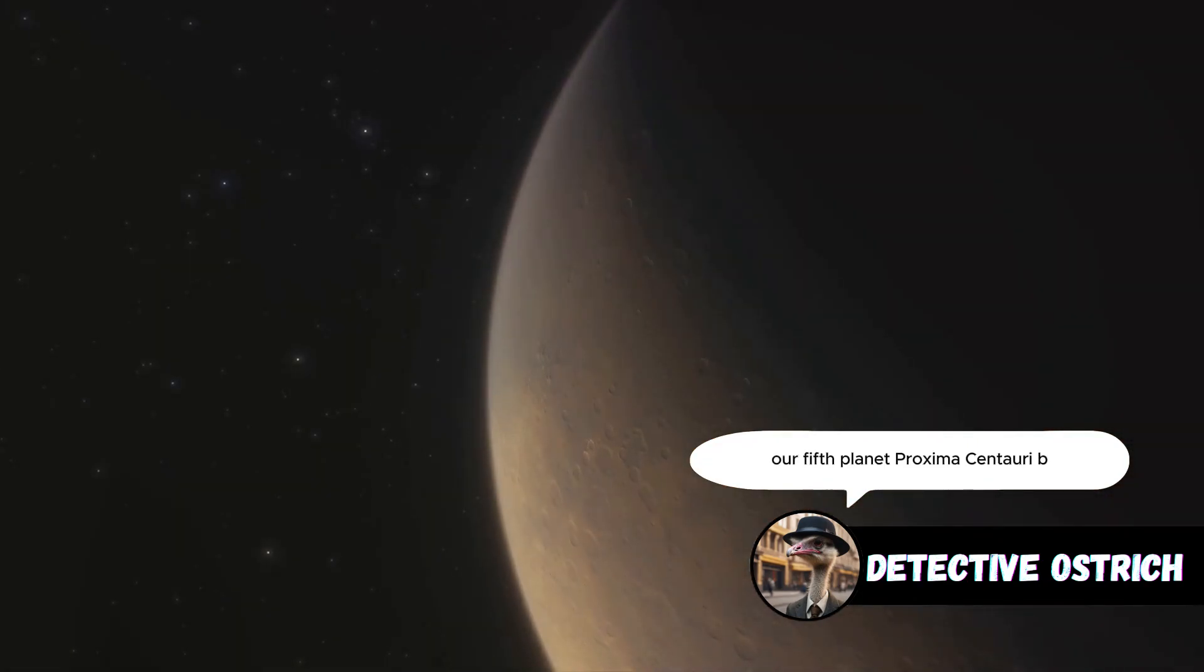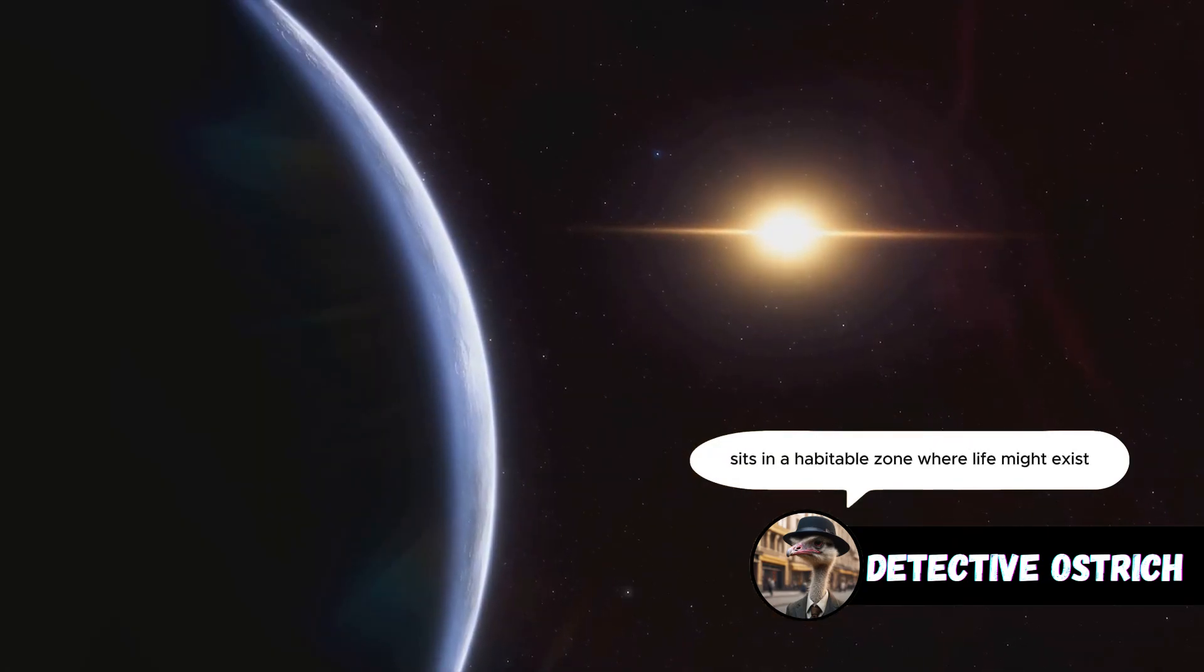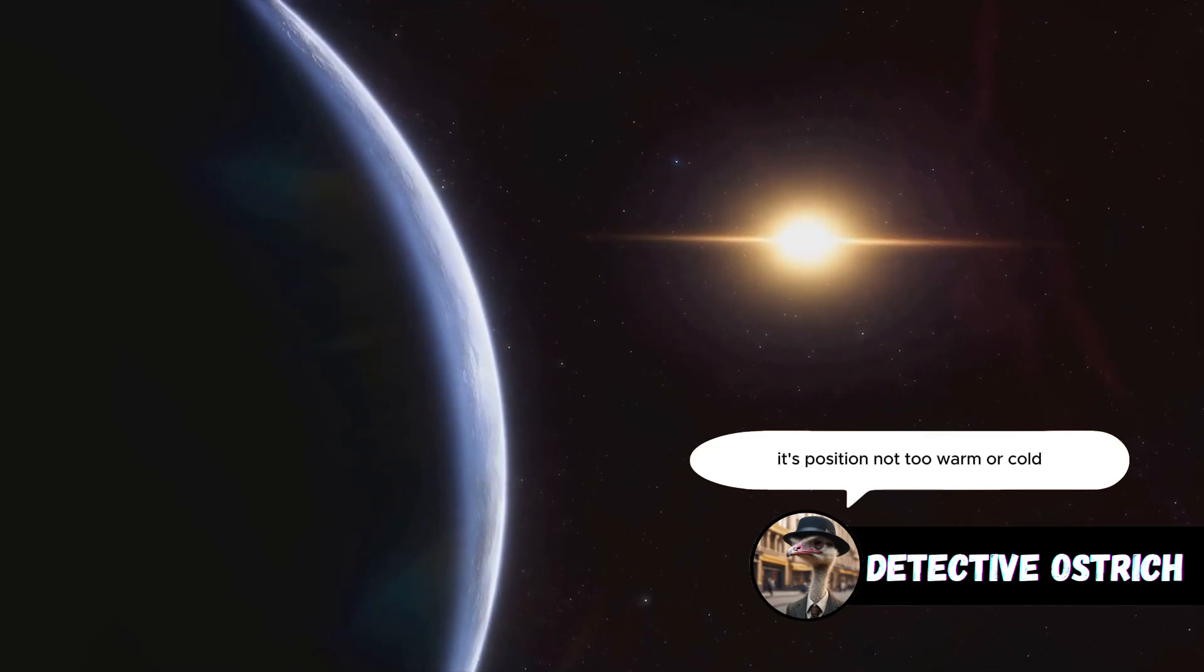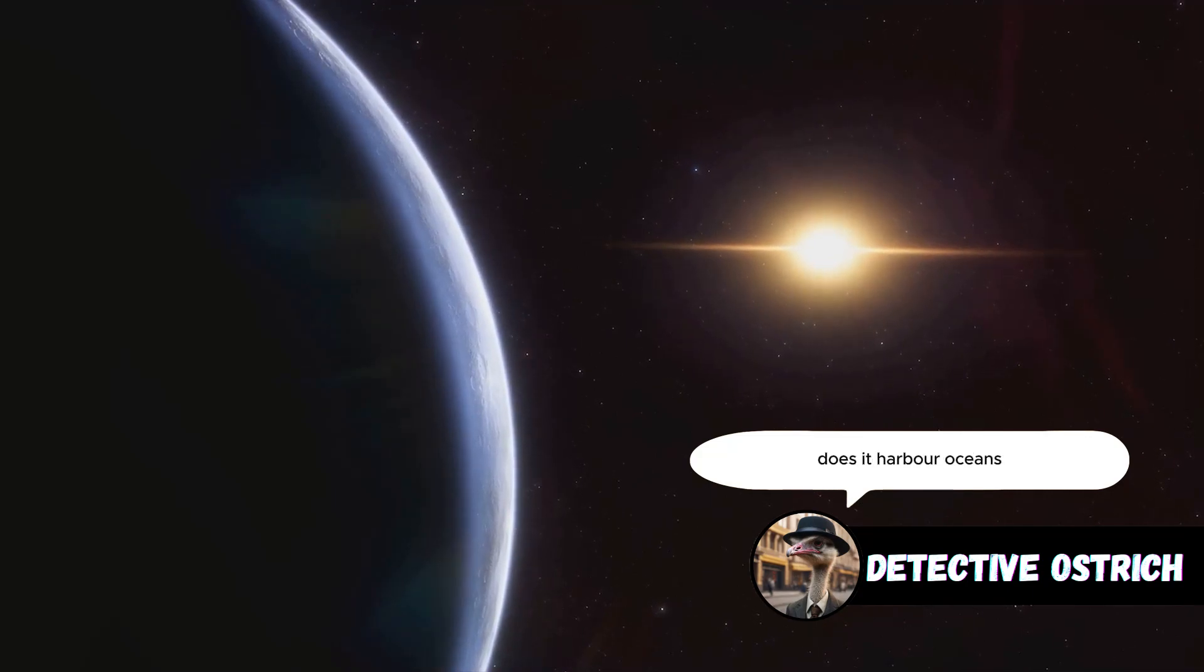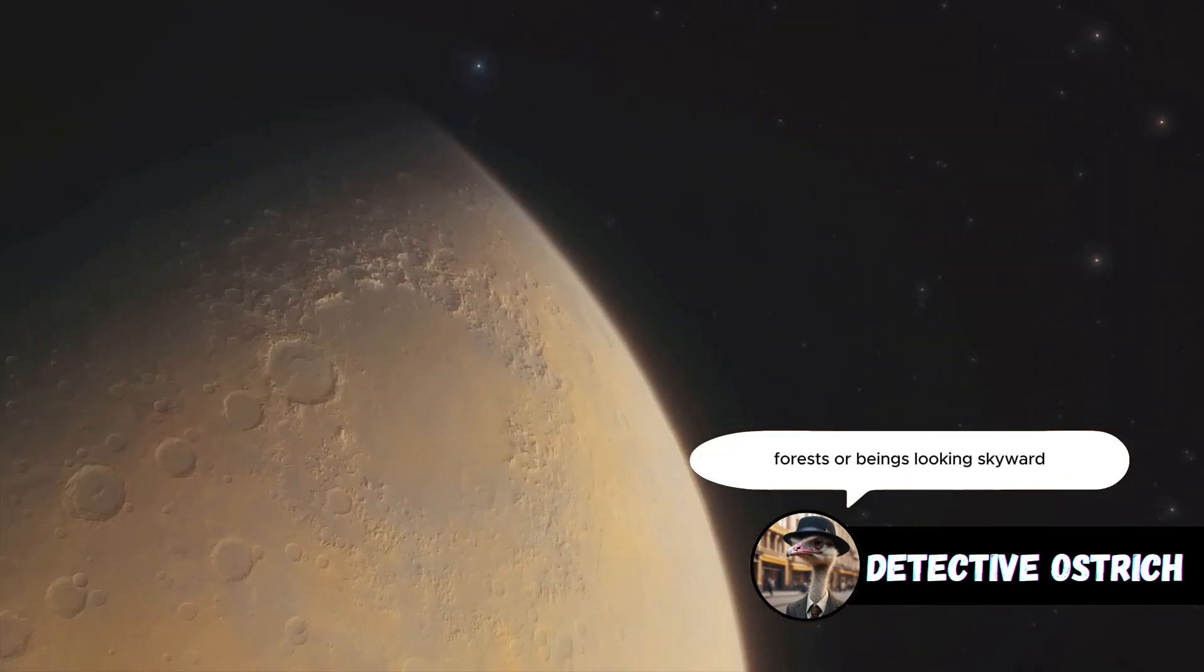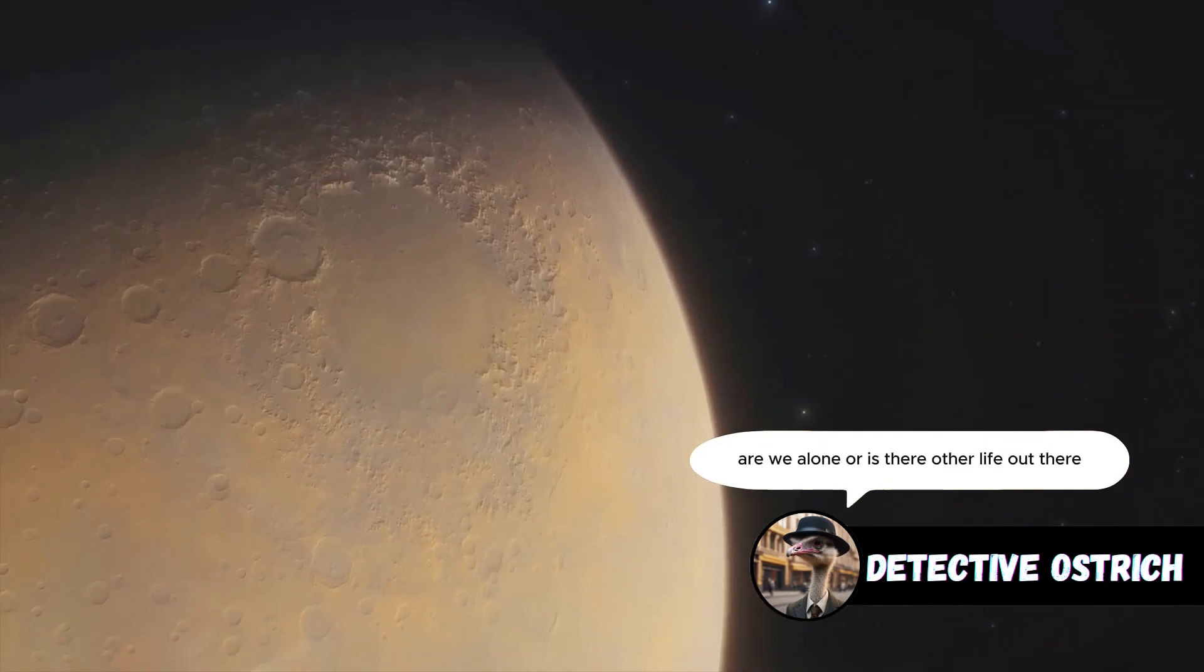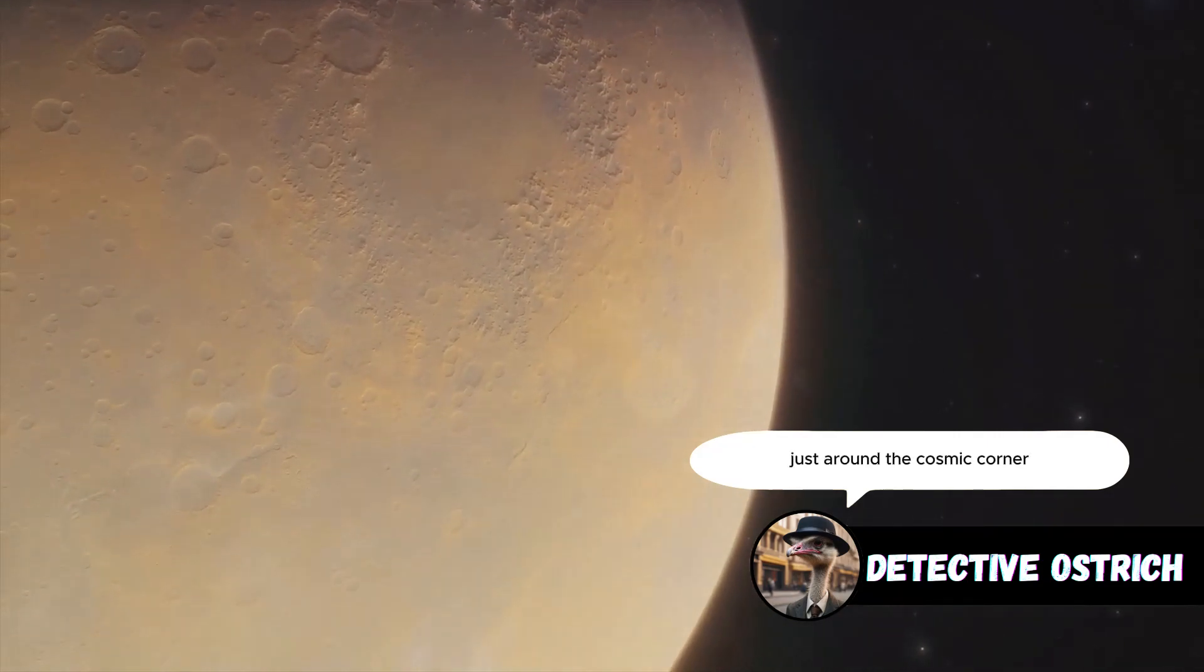Our fifth planet, Proxima Centauri b, is a close neighbor, located in the habitable zone of our nearest star. This celestial body, so close in the cosmic expanse, sits in a habitable zone where life might exist. Its position, not too warm or cold, could support liquid water, crucial for life. Does it harbor oceans, forests, or beings looking skyward, pondering about us? The thought is exciting and provokes contemplation. Are we alone, or is there other life out there? Could life be waiting for us just around the cosmic corner?